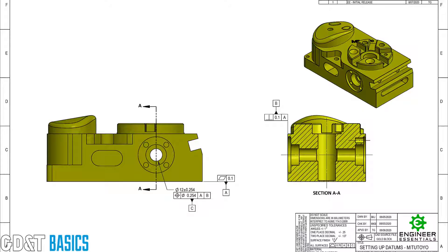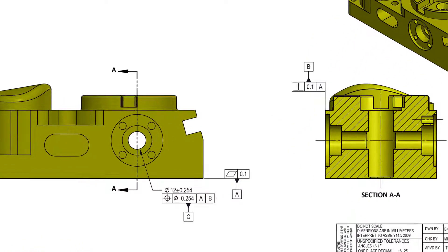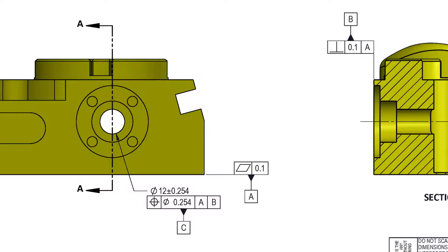Let's take a look at datum feature C. We do see here that the datum symbol is attached to a feature control frame. It is a position tolerance. It is cylindrical, this tolerance zone. It's cylindrical. We see the diameter symbol there. The size of that cylinder is 254 microns. Now this will be parallel to A because A is the primary datum. So this tolerance zone will be set parallel to A. And this is the theoretical datum, right?